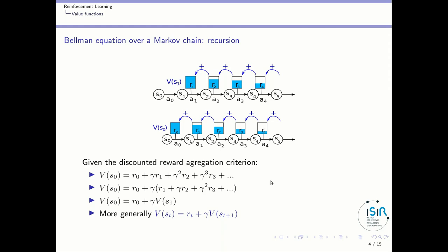So how do we compute the value of following a particular policy? Assume an agent which was in state s0, it performed that action and then it was in that state, that action, etc. — that's the trajectory of an agent. I assume I am discounting the value, as I explained when defining Markov decision processes. So the value of being in s1 is r1 plus gamma times r2 plus gamma squared times r3 plus gamma to the power of 3 times r4, etc. And the value of s0 is r0 plus gamma times r1 plus gamma squared times r2 plus gamma to the power of 3 times r3, etc.